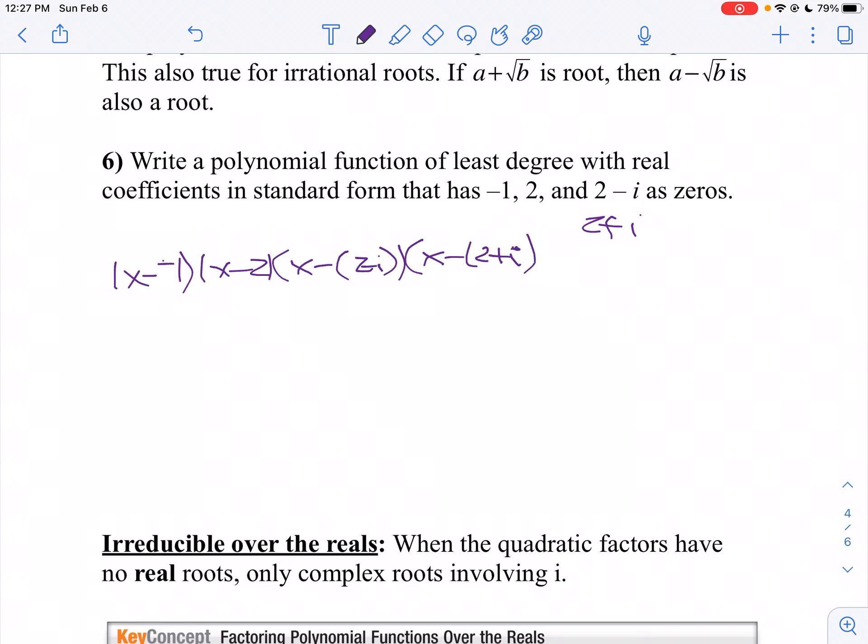Let's simplify that. So that will be (x plus one) times (x minus two) times (x minus two plus i) times (x minus two minus i).